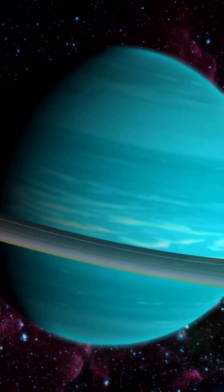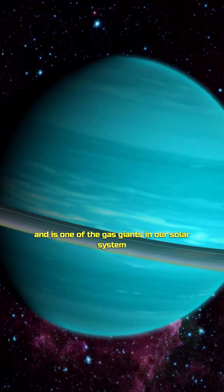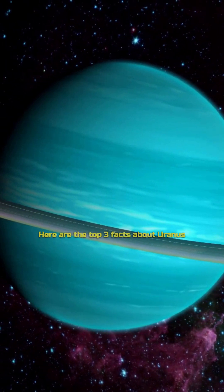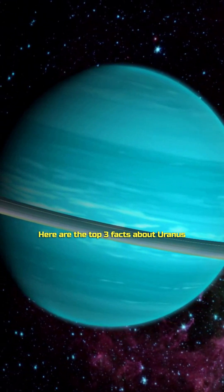Uranus is the seventh planet from the Sun and is one of the gas giants in our solar system. Here are the top three facts about Uranus.